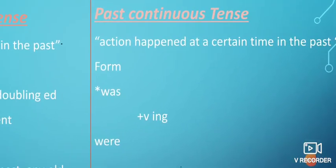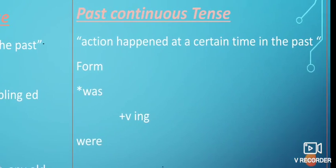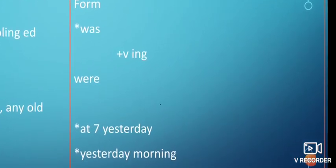The second tense: past continuous. The past continuous tense expresses an action that happened at a certain time in the past. When I say 'at seven o'clock yesterday,' this means a certain time in the past. The form is: was or were + verb + -ing.